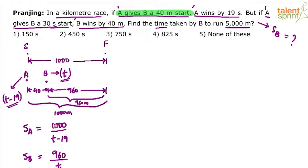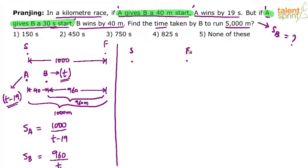Now let us look at the second scenario. A gives B a 30 second start. The race is still 1000 meters. Unlike the previous case where B was 40 meters ahead, here both A and B are at the same starting point.